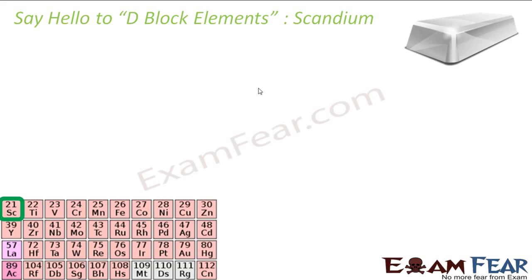We'll start with Scandium. This is the element Scandium and the atomic number is 21 and the short name is Sc. It is again silvery white soft metal. We'll see most of the metal in the D block elements will be silvery. Few exceptions copper, gold, but most of them will be silvery.